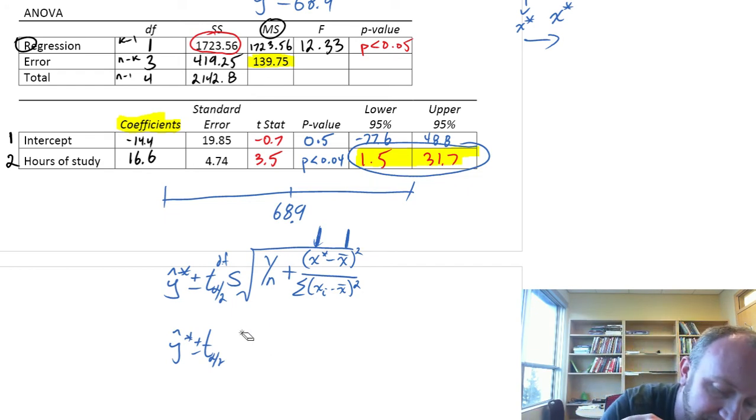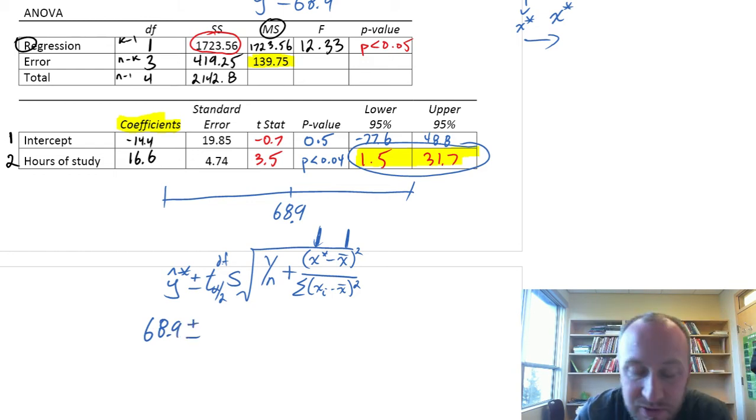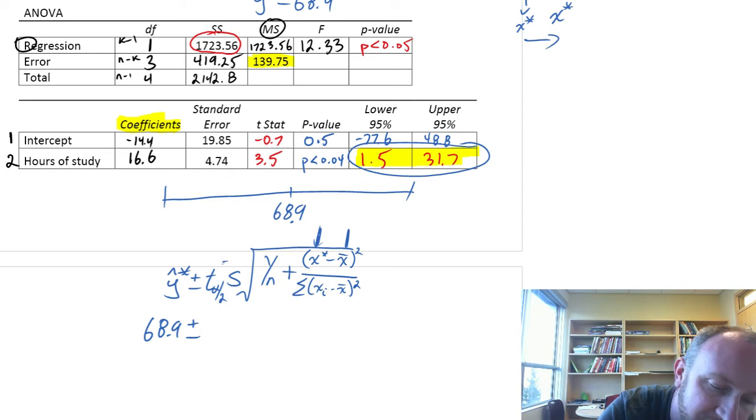So, let's, without further ado, plug in some numbers here. So, here we had our point estimate, it was 68.9, plus or minus. Now, this critical value, the degrees of freedom, corresponds with MSE, as always corresponds with our estimate of the variance.